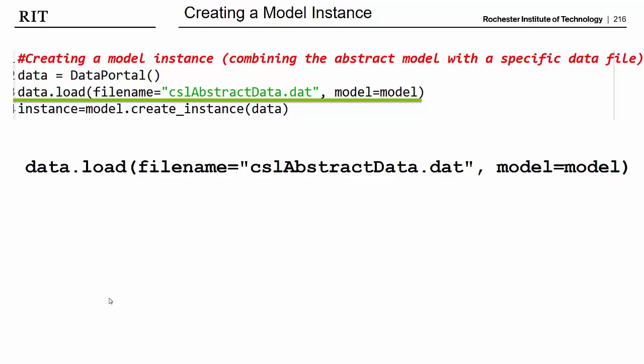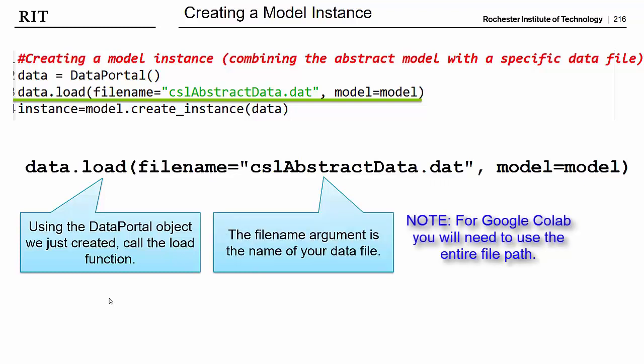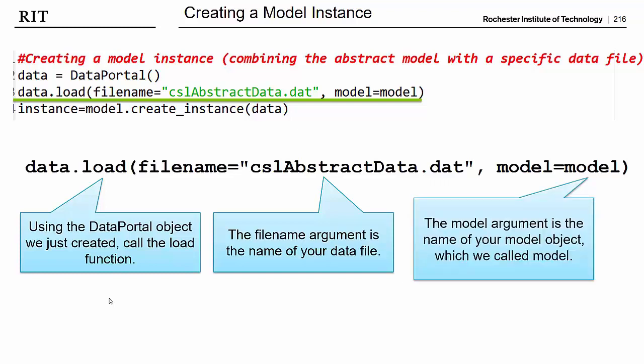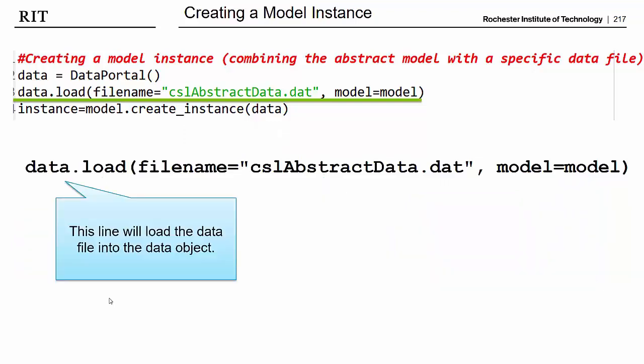Now this next line makes use of that data portal object that we've named data, and it calls the load function. The load function takes two parameters. The first parameter is the file name of our data file. So here in this example, the data file's name is csl-abstract-data.dat. Your data file is most likely named csl-data.dat, so you'll want to change that a little bit. And then the second argument that the load function takes is a model. So basically, in order to read that data file, we need the model file to know how to interpret it. And again, note that your data file probably is named csl-data.dat. So this line essentially is going to load our data file and store all that information in this data object.